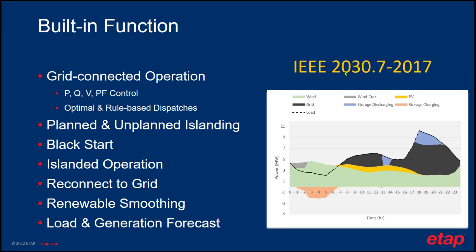The built-in functions offered for the microgrid controller meet all the functions specified in IEEE 2030.7. We offer grid-connected functions such as limits for active power at the point of interconnection, reactive power control, QV, and power factor control. For dispatching assets — especially energy storage — we have both optimal and rule-based dispatches. We also have both planned and unplanned islanding functions, black start, islanded operation, reconnect to grid, renewable smoothing, and load and generation forecasting.